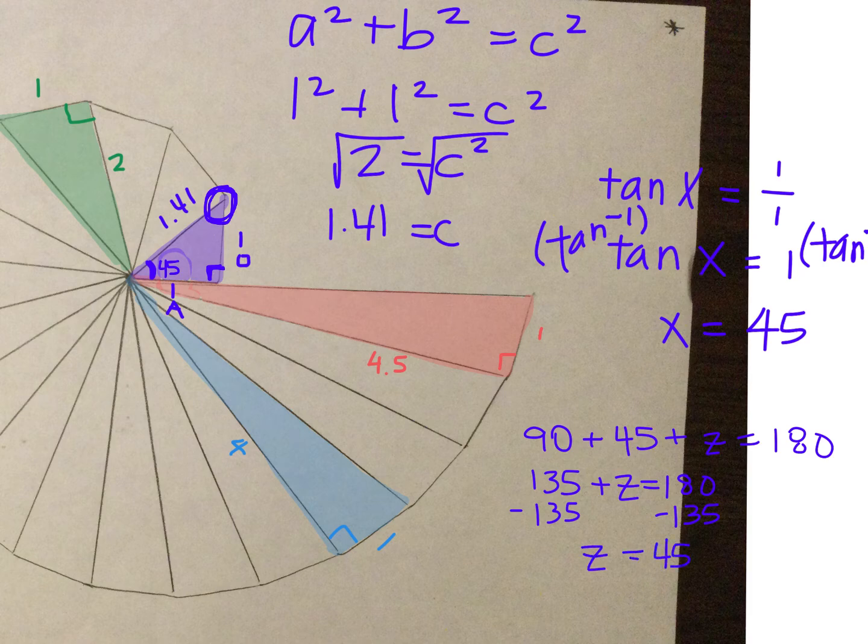So now I have all the information I need. My sides are 1, 1, and 1.41. And my angles are 90, 45, and 45.